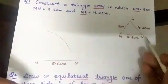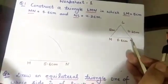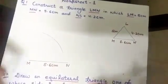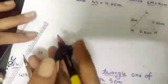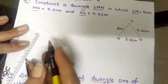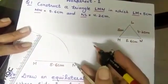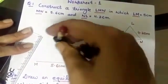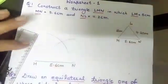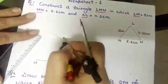Now, the third side is NL. The measurement of NL is 4.2 cm. Name is NL. So N should be the base. Taking N as a base, open the compass 4.2 cm. Keeping the tip of your compass at point N and draw the arc which cut the previous arc at a point. That point is L.